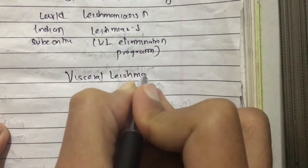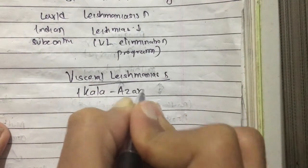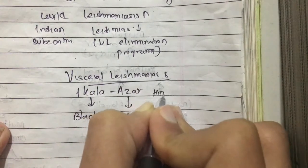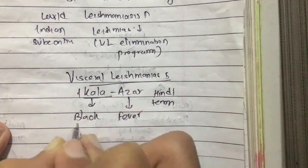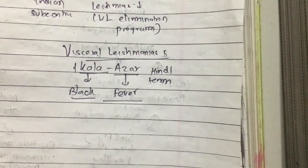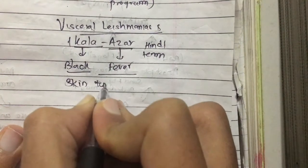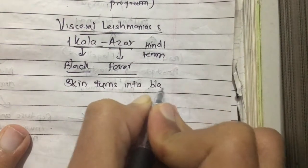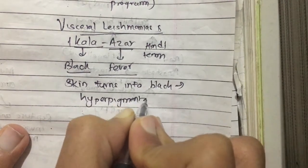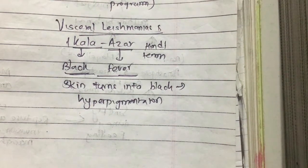Let us talk about visceral leishmaniasis. Visceral leishmaniasis is also known as kala azar. 'Kala' means black and 'azar' means fever — it is a Hindi term. It is called black fever because the skin turns black due to hyperpigmentation.